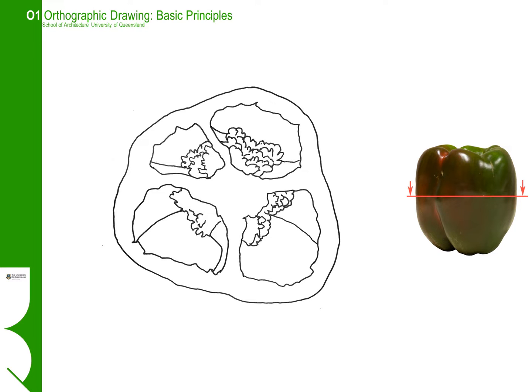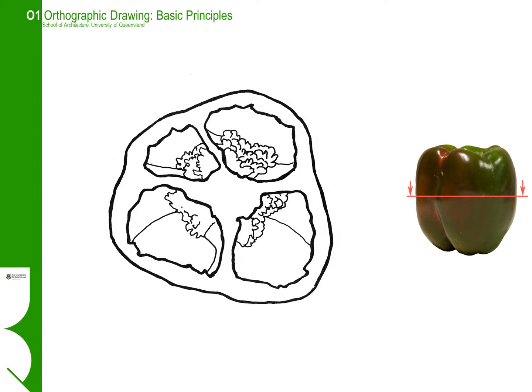A lot of the techniques of orthographic drawing can be a little bit difficult to read because they are unreal drawings, but some of the techniques that we use help make the drawings read a little more clearly. In this instance, we have firmed up, or given a heavier line to, those parts of the capsicum that are cut. Those parts that are still in elevation — the bits that aren't cut — we keep those in a thinner line.